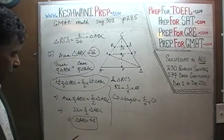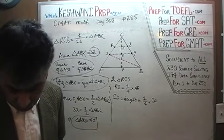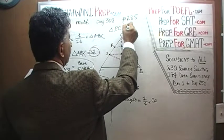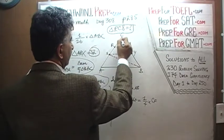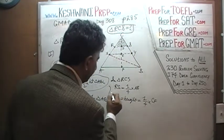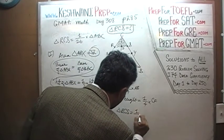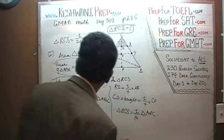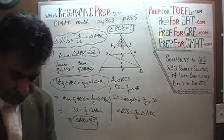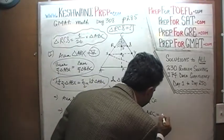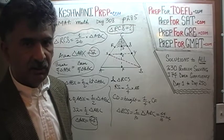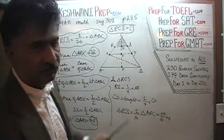ABC must be 64. The question was: what is the area of triangle RCS? We just established that RCS is one-sixteenth of the area of triangle ABC. ABC is 64, so RCS equals 64 over 16, which is 4. The first statement by itself is quite sufficient to answer the question.